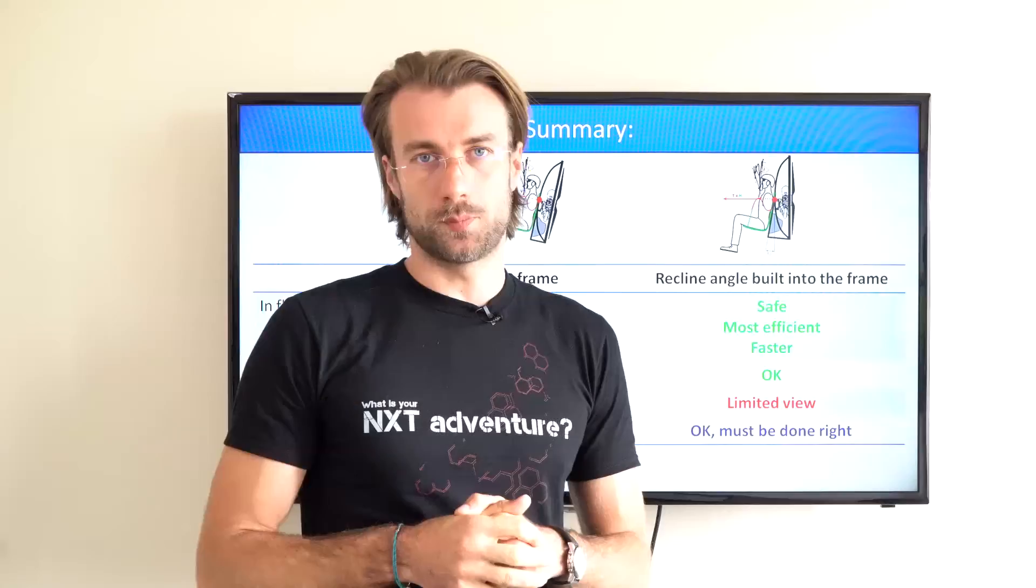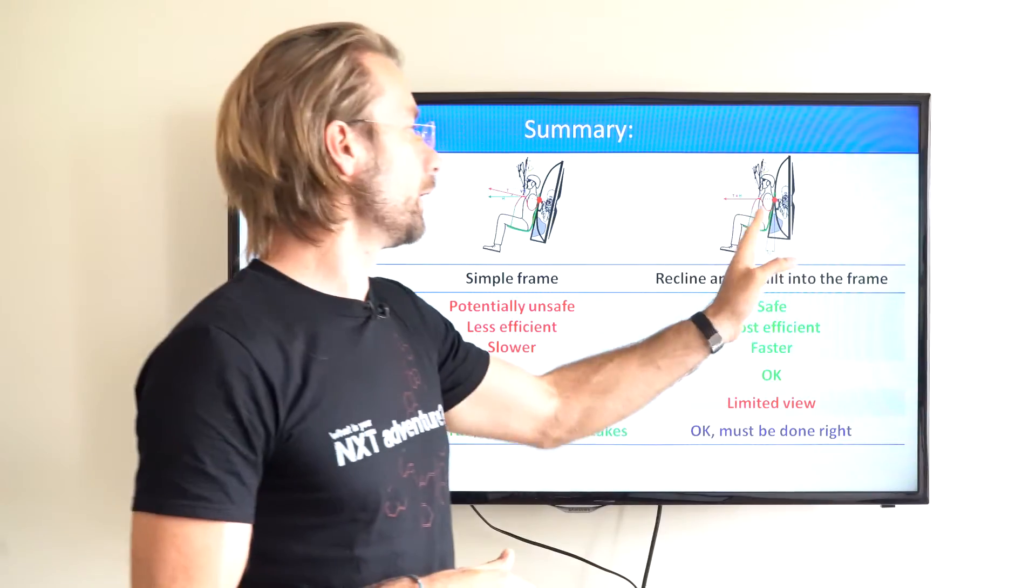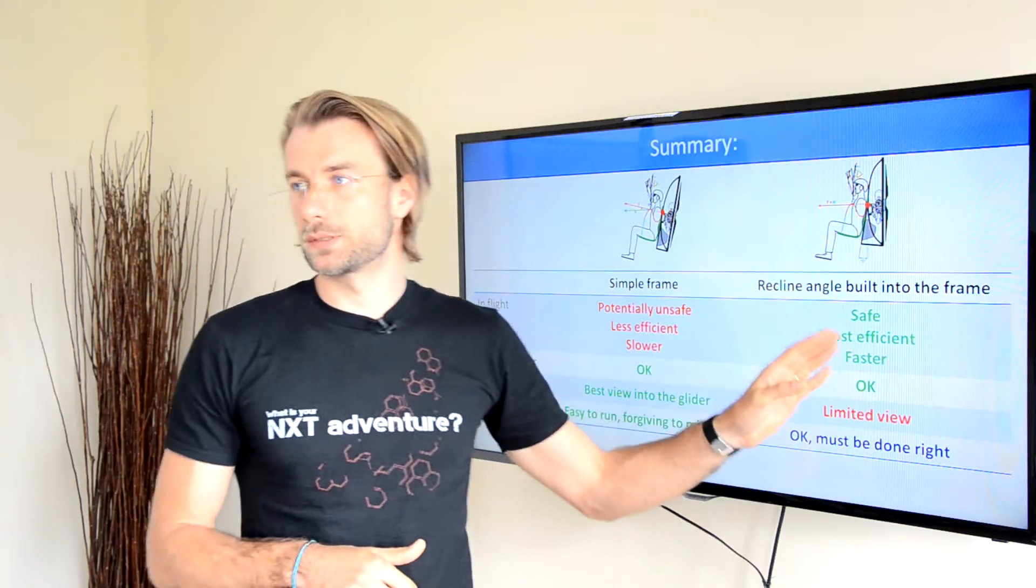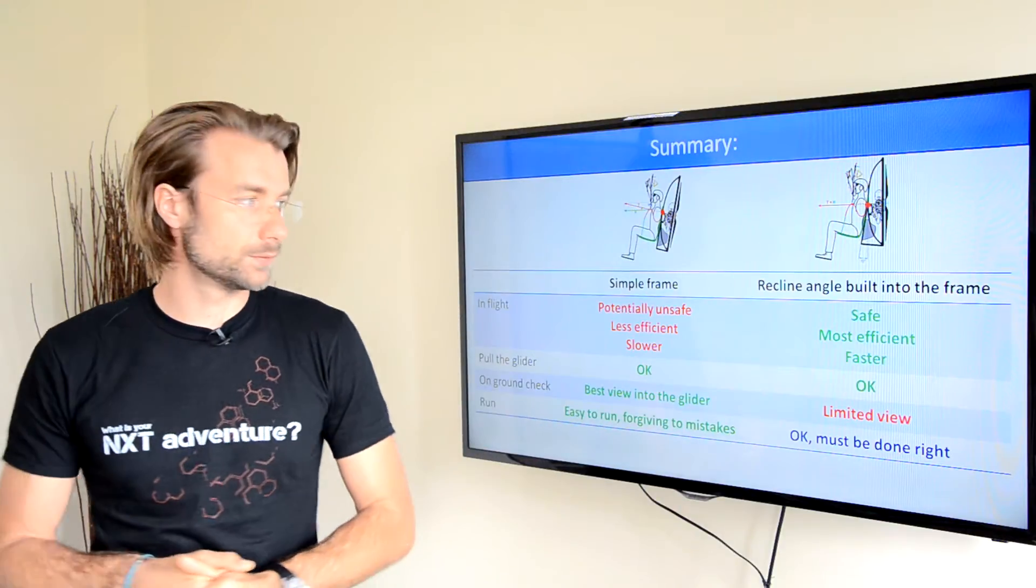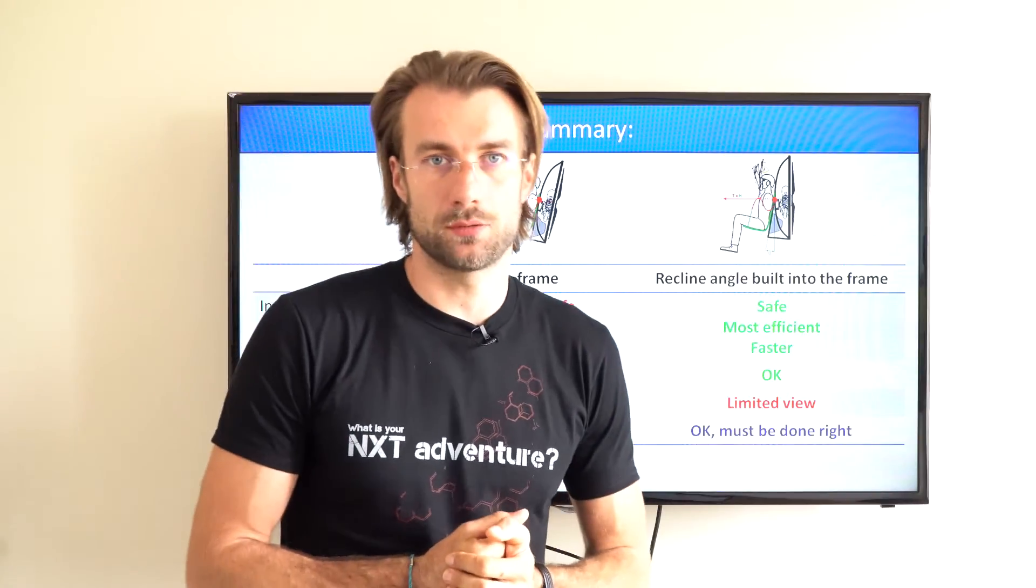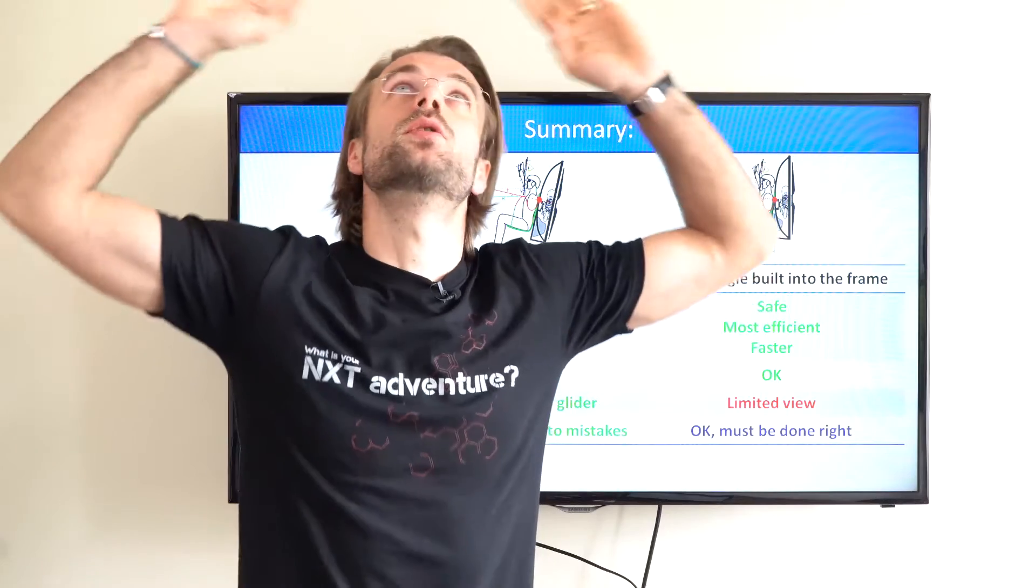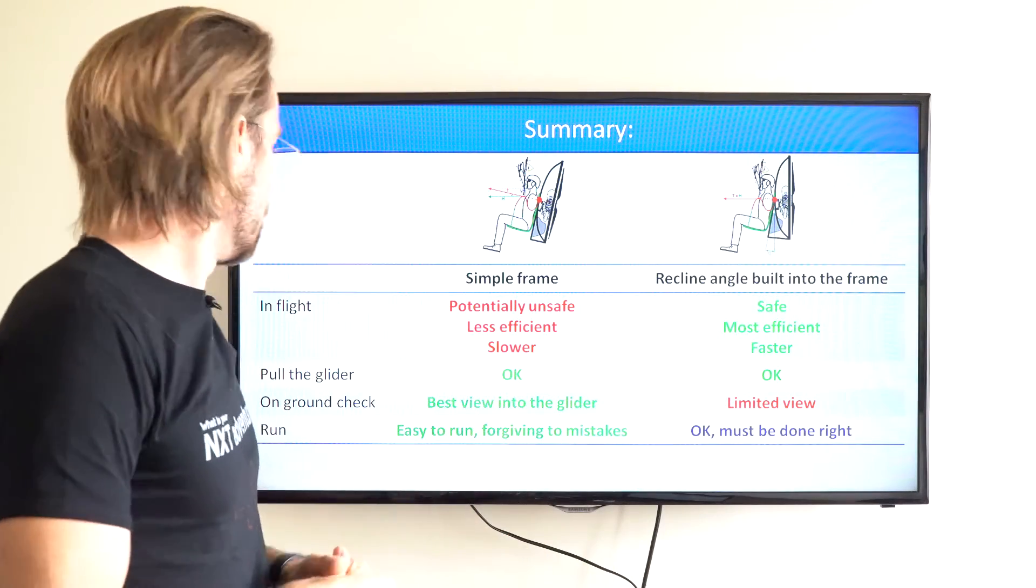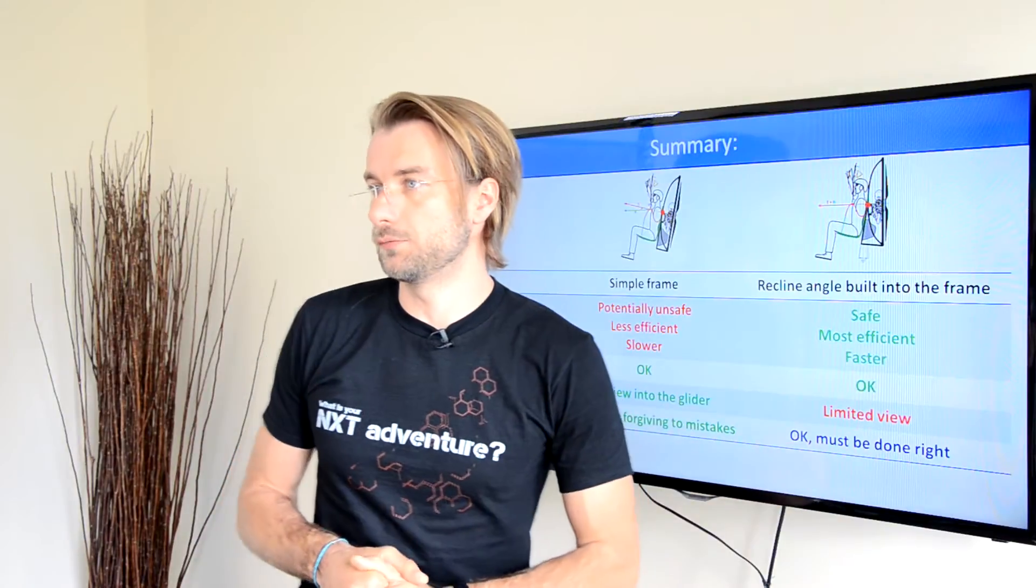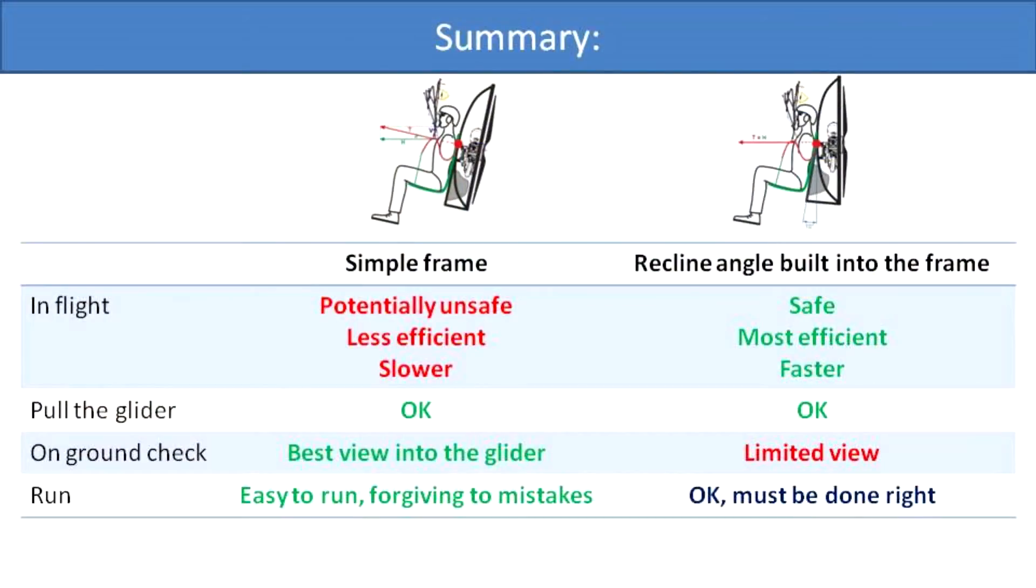Let's do the final comparison of both frame geometry options—the simple frame and a frame with the built-in recline angle. As said before, this is the safest, most efficient, and the fastest configuration. There are some disadvantages and that is the limited view to check your glider on takeoff, but you can perfectly see your tips, probably maybe not the center part. Final run on full throttle, it's okay if you do it right. This configuration is somewhat more forgiving for beginner mistakes.